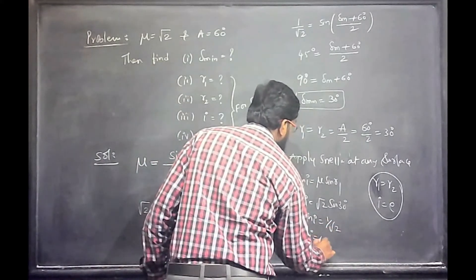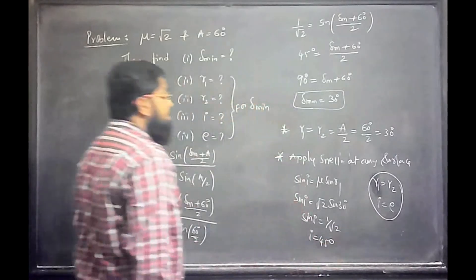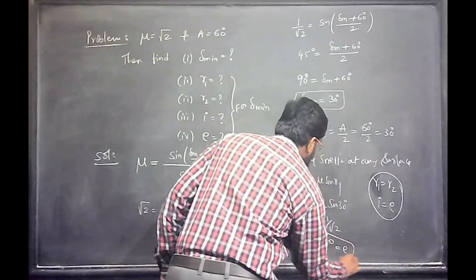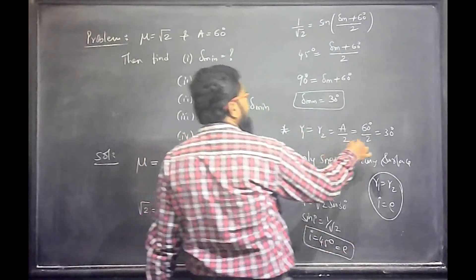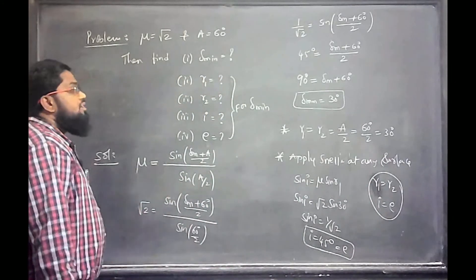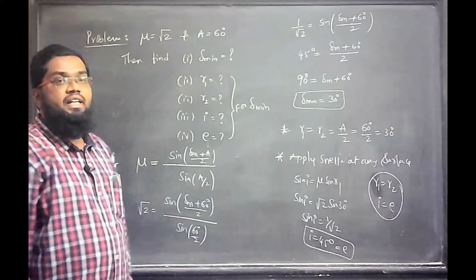I is equal to angle of incidence of 45 degrees. That is same as angle of emergence. Angle of emergence is 45 degrees. R1 equal to R2 is 30 degrees. So we get the minimum deviation is also 30 degrees.